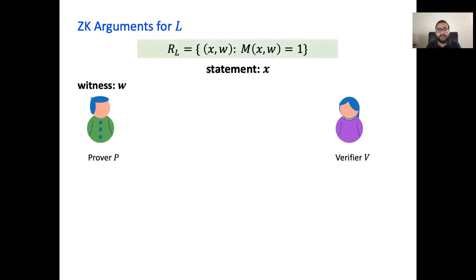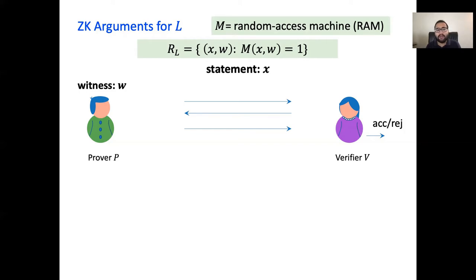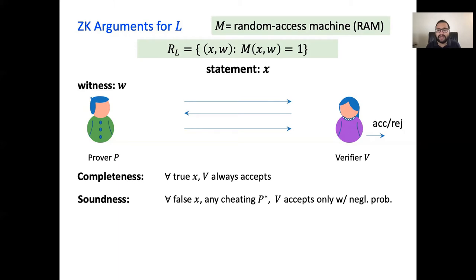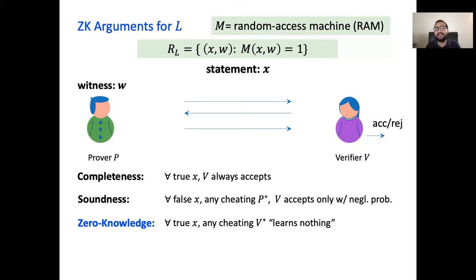A bit more formally, a zero-knowledge argument for a language L is an interactive protocol between a prover and a verifier where the prover is given as input an instance from the language along with some witness and wants to convince the verifier that the instance is in the language. Our focus going forward will be on languages accepted by random access machines, or RAM for short. Such arguments are required to satisfy standard properties like completeness and soundness. Additionally, we need zero-knowledge, which informally captures that for true statements, curious verifiers learn nothing more than the fact that the statement is true.